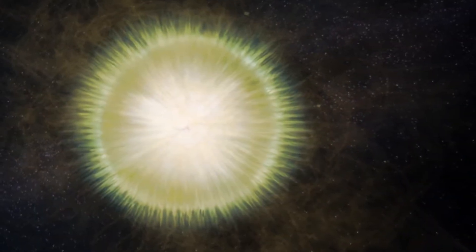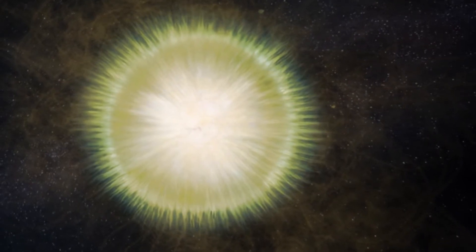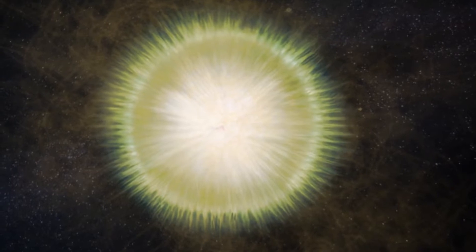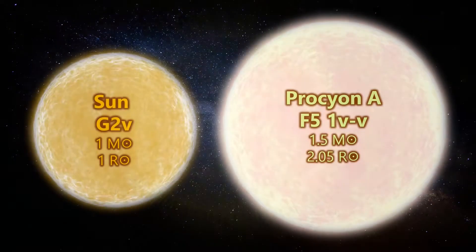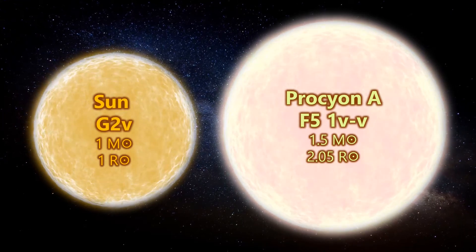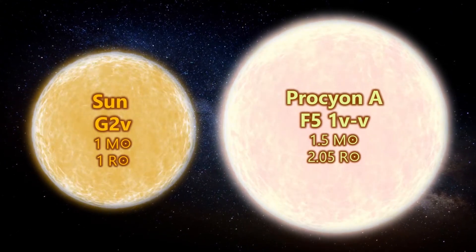We've talked about Procyon before on this channel, the nearest F-class star to the sun. You might have thought Procyon was slightly bigger and brighter than our sun and you wouldn't be wrong. Procyon is around 1.5 times the solar mass and twice the solar radius and has 7 times the sun's luminosity.